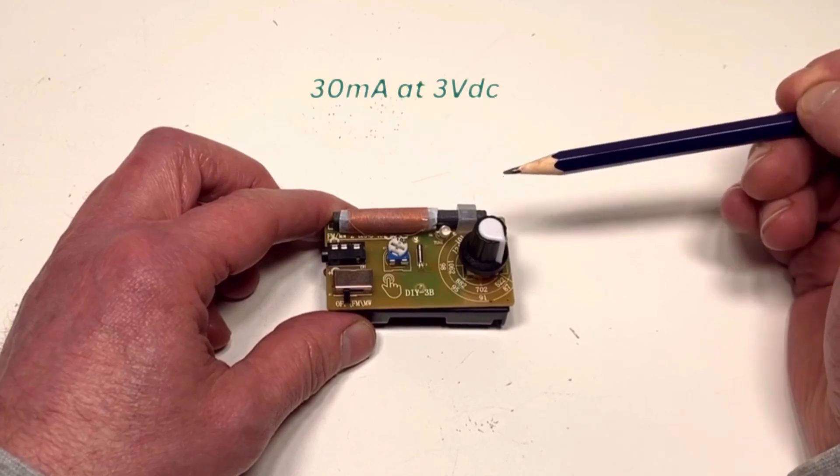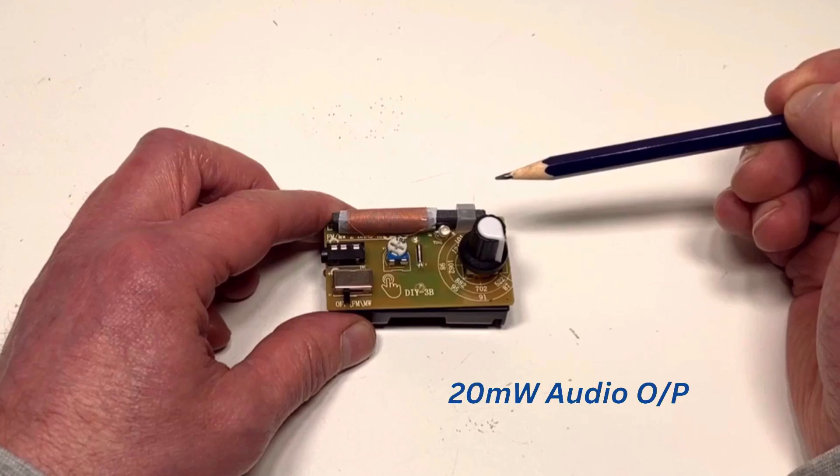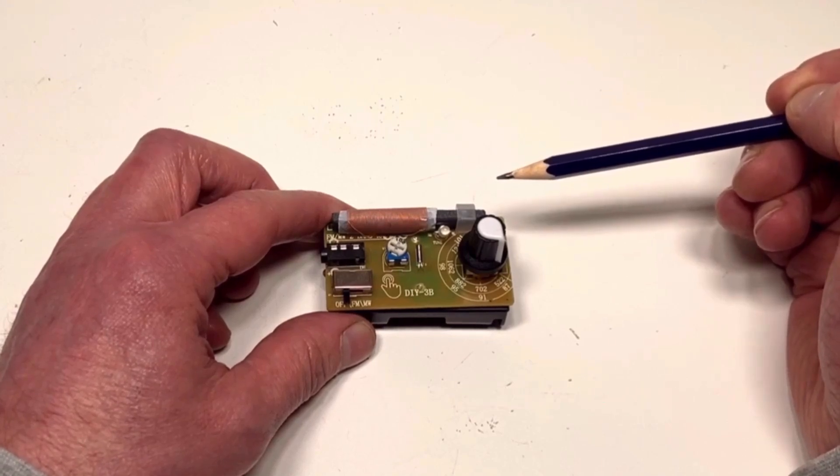Power consumption, that's around 30 milliamps. So the AA battery should last quite a while. And the audio output is in the range of about 20 milliwatts. So the question is, what is controlling this little receiver? So let's find out.